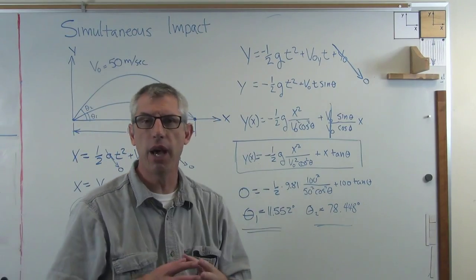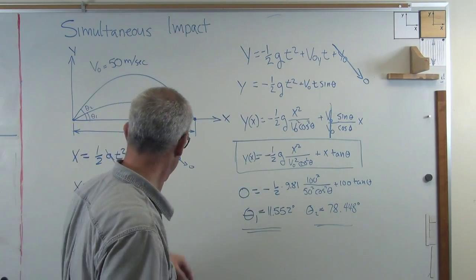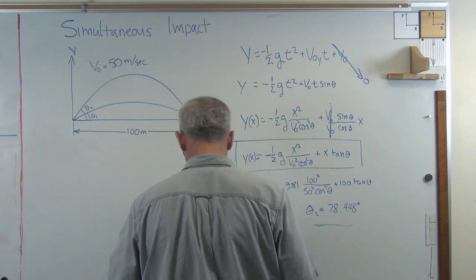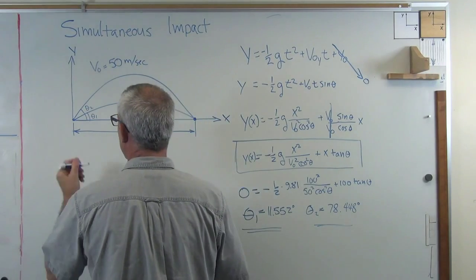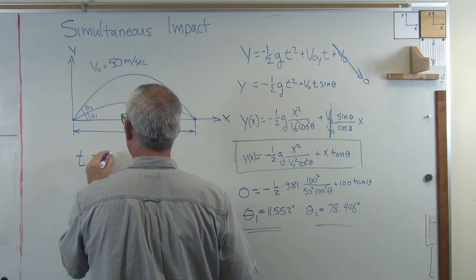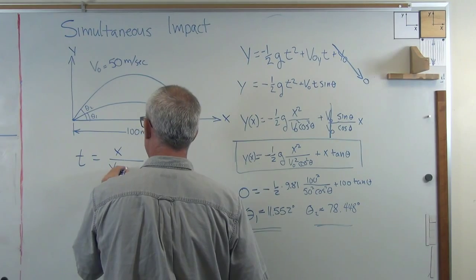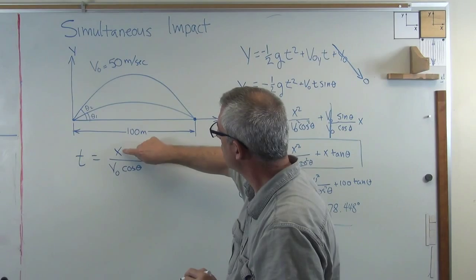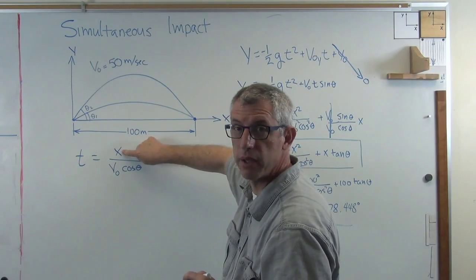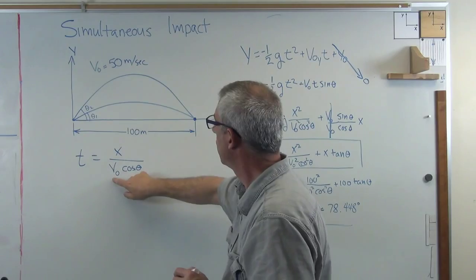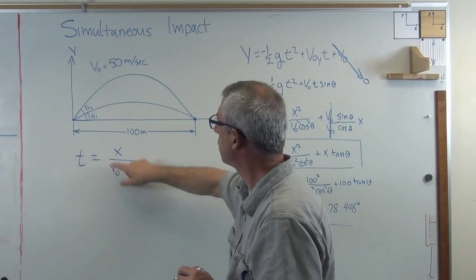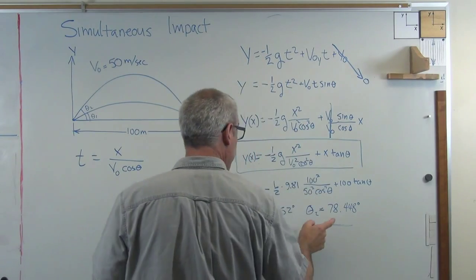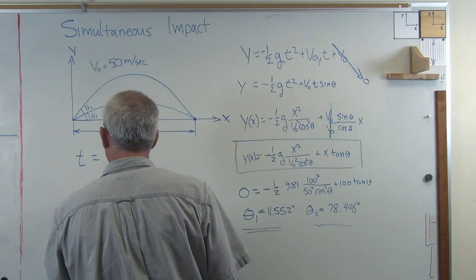All right, so all I need to do now is figure out how long it takes to get from the launch point to the target, and I get to use, oops, I just erased it. I'm going to use this expression right here. t equals x over v₀ cosine theta. All right? To find t, I'll put in 100 for my x. That's the distance from the launch point to the target. Put in 50 for my velocity in meters per second, and cosine theta. I've got two different values of cosine theta, because I've got two different values of theta. Work those out.